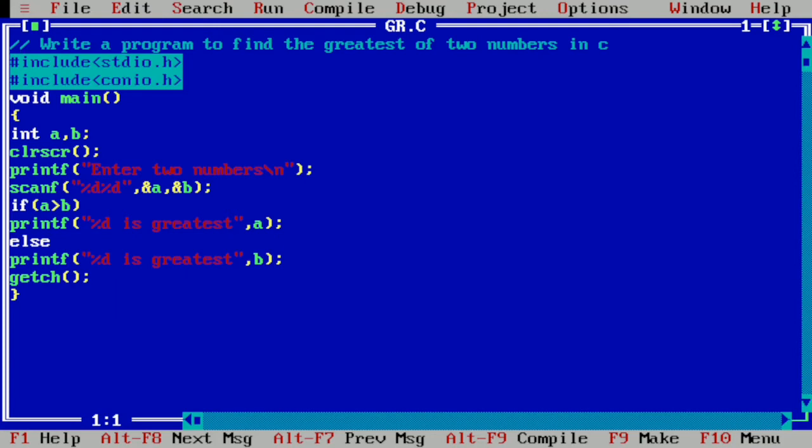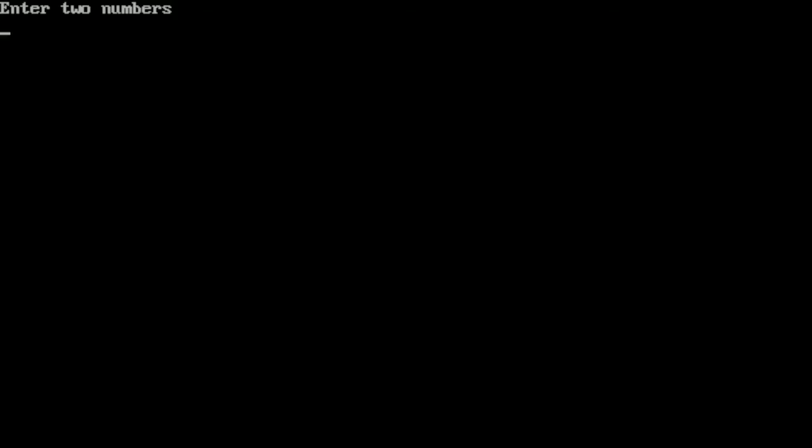And now it's time to run the program by pressing Ctrl F9. Here you can see it is asking the user to enter two numbers and you can see the cursor is blinking down to the next line. It is just because of backward slash n. Now I am going to enter 5 and press Enter, 10 and then press Enter. Here you can see it is showing 10 is greatest.